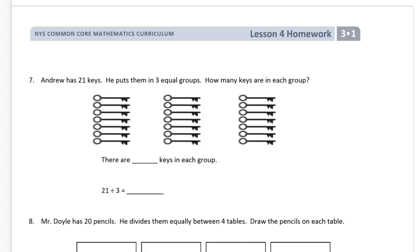Andrew has 21 keys. There's 21 total keys in this whole picture. He puts them into three equal groups. How many keys are in each group? We can count them. One, two, three, four, five, six, seven. There are seven keys in each group. We know that they're equal groups, so we don't have to count all of them because it tells us that they're equal. So we have 21 keys divided into three groups equals seven keys in each group.